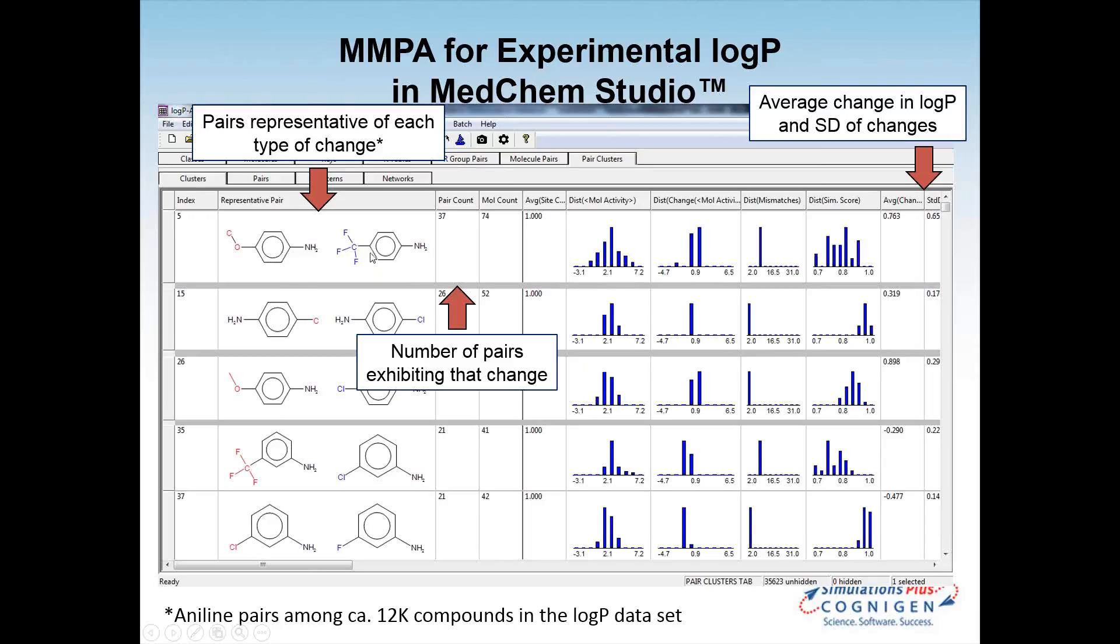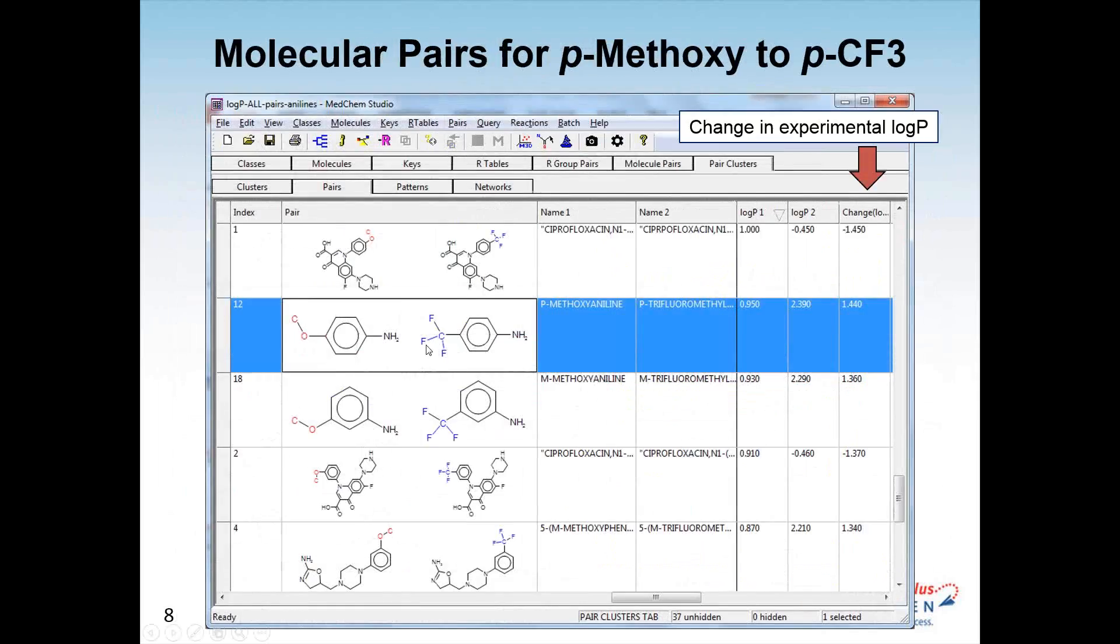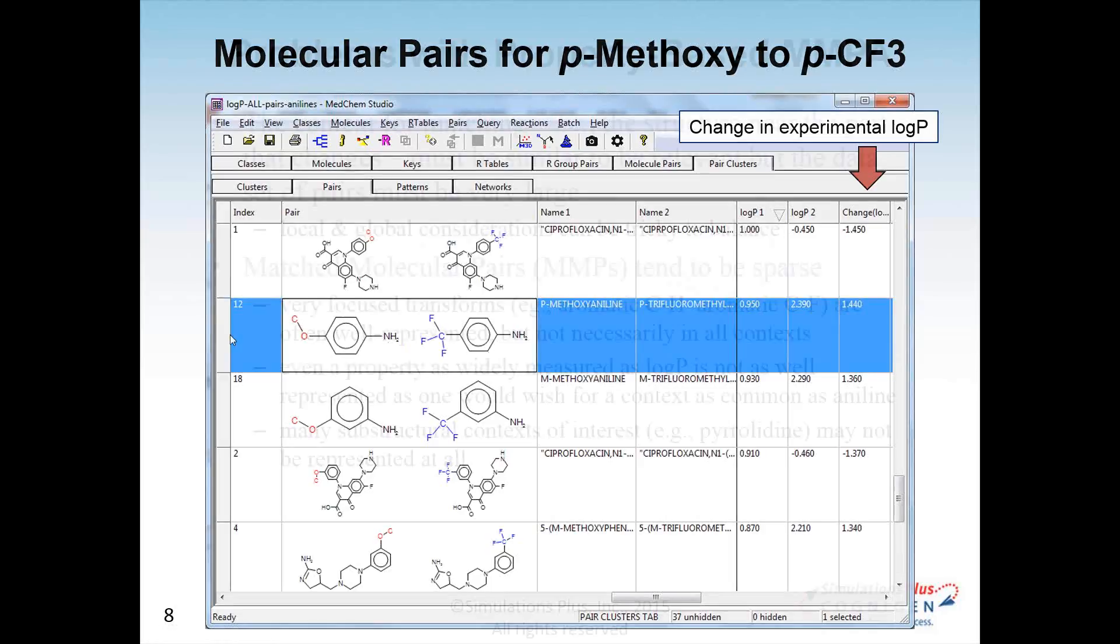This is drilling down into that methoxy CF3 group, so you can see there's quite a range of changes. In some cases, the log P actually goes down instead of going up, although more often than not it goes up, roughly around 0.3 to 0.9 on average.